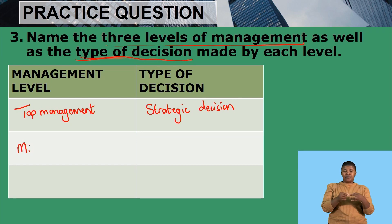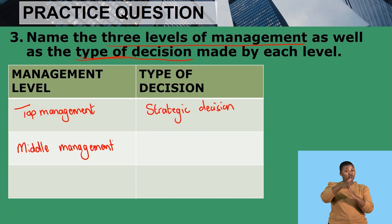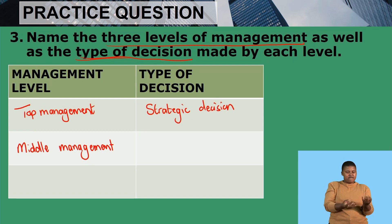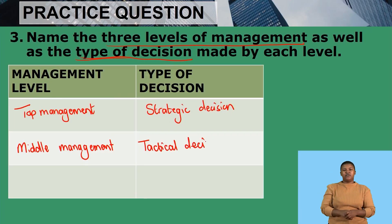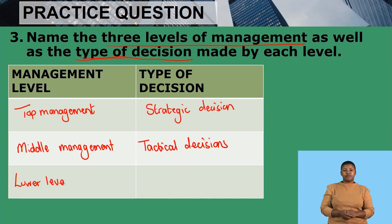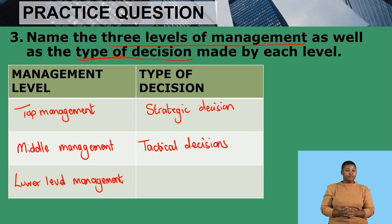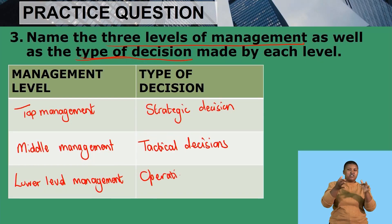The second level of management is middle management. They break down top management decisions and make them more applicable to their specific department, so we say they make tactical decisions. And then lastly we have lower level management — usually our supervisors — who take the tactical decisions and break them down into day-to-day tasks, making operational decisions.